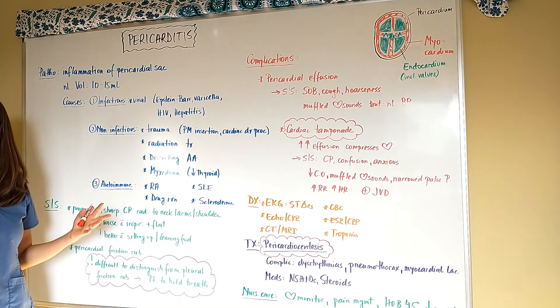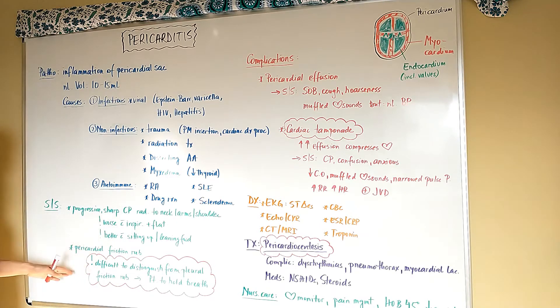Now a pericardial friction rub might be very difficult to distinguish from a pleural friction rub, which is more of a lung issue. The easiest way to determine if you're hearing a rub is: is it coming from the heart or lungs? Have the patient hold their breath. That way you eliminate the noise of the lungs, and if you still hear that rub, then it's probably a pericardial friction rub rather than a pleural friction rub. Just remember to tell the patient to continue breathing when you're done listening to their heart.